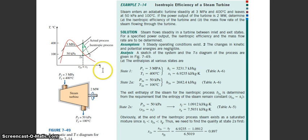For state 2S, you have to remember that S2S equals S1. Now using this information, compare with SG at 50 kilopascal. When you make the comparison, you will see that S2S is less than SG, so you have to find SF and SFG.